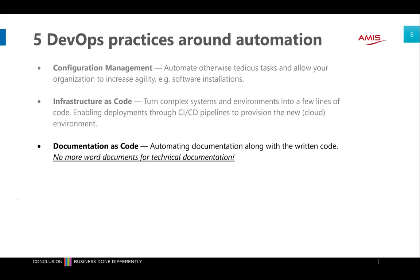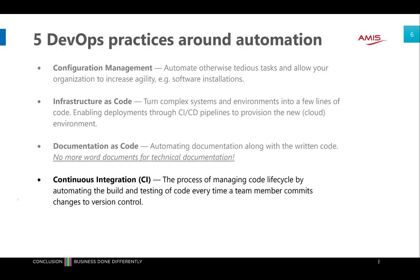An extension of infrastructure as code — and even everything as code — is documentation as code. With this we automate documentation alongside the written code. This can be things like Markdown or AsciiDoc. You create technical documentation alongside the code for developers, operations, and everyone involved in the project, instead of having Word documents that you share or edit. You can see changes in Git, so version control applies to documentation just as it does to code.